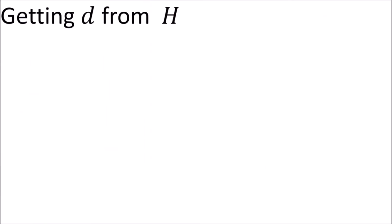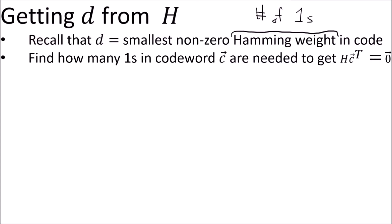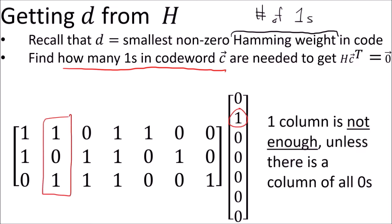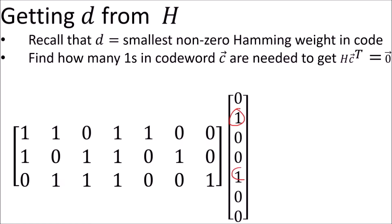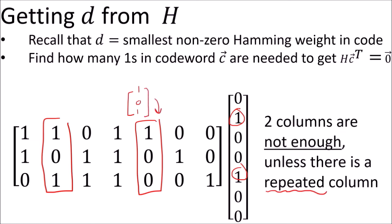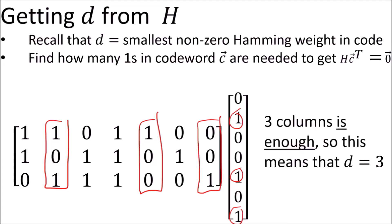One last thing I'll mention is how to get the minimum distance D from the parity check matrix H. Recall that D is equal to the smallest non-zero Hamming weight in the set of all valid codewords, where the Hamming weight is just the number of 1s in the codeword. To find D, all we need to do is figure out the minimum number of 1s required in the column vector to make the output 0. A single 1 is not enough because the only way to output all 0s is if there was a column in H that was also all 0s. Two 1s aren't enough because that would require a column to be repeated so it cancels itself out. Finally, three columns are enough to add together to output 0, so the minimum non-zero Hamming weight is 3, and the minimum distance is also 3.